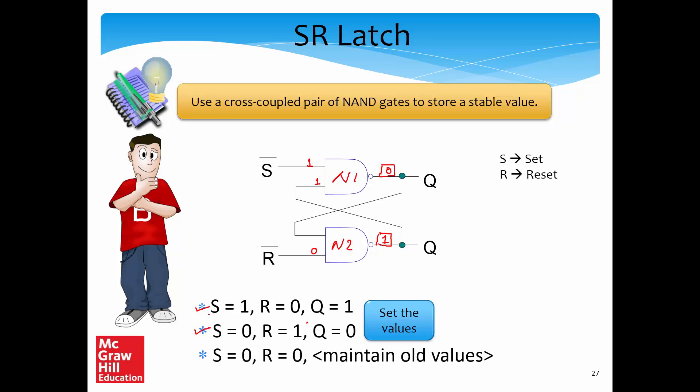So the connotation is: S is the set signal, and if S equals 1 then Q gets set to 1. R is the reset signal, and if R equals 1 and S equals 0, then Q gets set to 0.